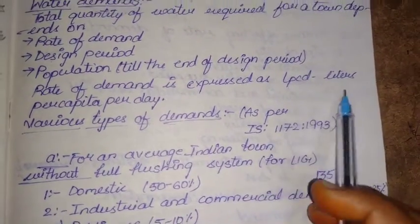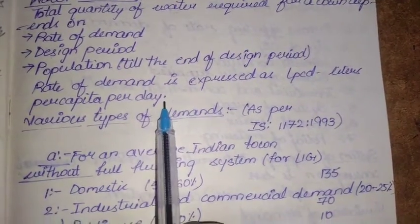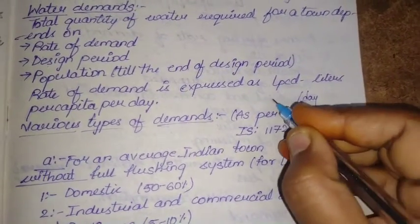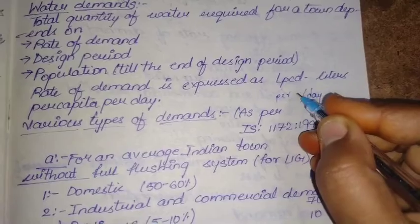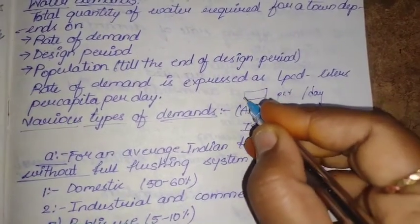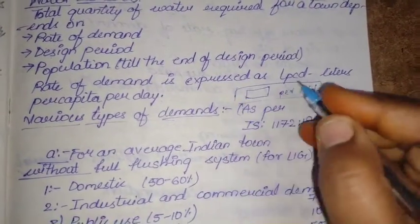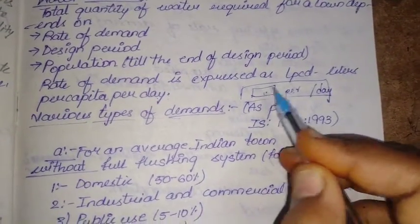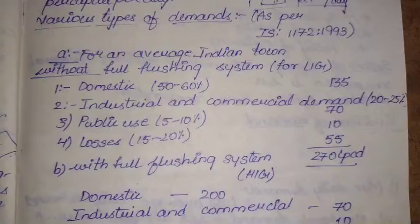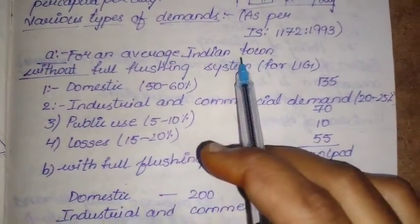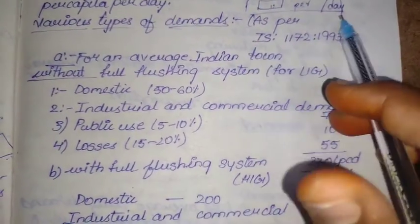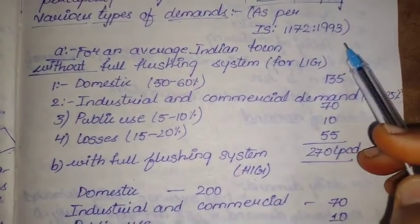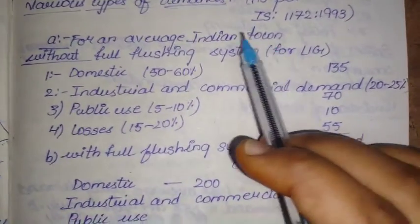The rate of demand is expressed as LPCD, that is liters per capita per day — how much water is required per person per day. We have various types of demands as per IS code 1172:1993.